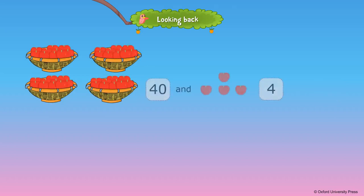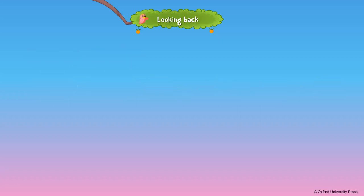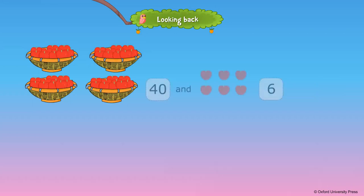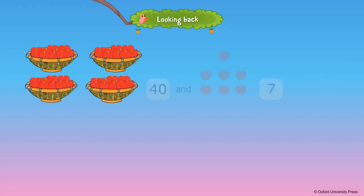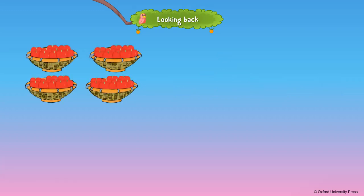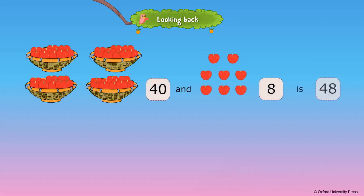If four more apples are added, we will have 44 apples. 40 and 4 is 44. If six more apples are added, we will have 46 apples. 40 and 6 is 46. If seven more apples are added, we will have 47 apples. 40 and 7 is 47. If eight more apples are added, we will have 48 apples. 40 and 8 is 48.